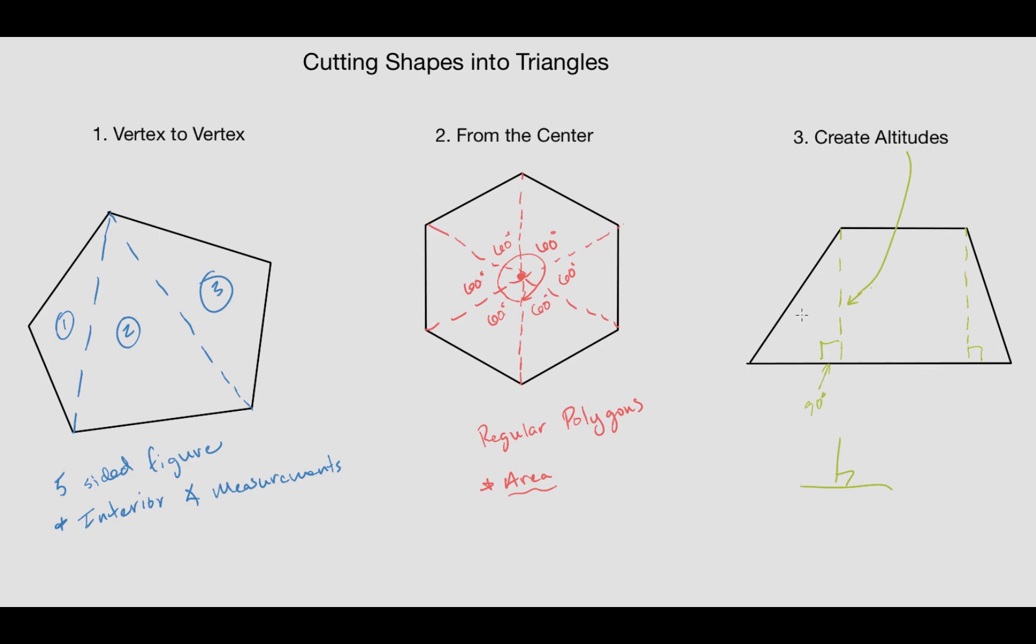What that did in this particular case is it created two right triangles here and here, and then we have a rectangle in the middle. So you can see how we took this trapezoid and broke it up into much simpler shapes. These are probably the three most useful examples of how we can cut up a more complex polygon into simple ones like triangles or rectangles.